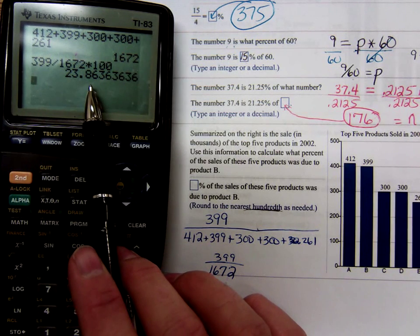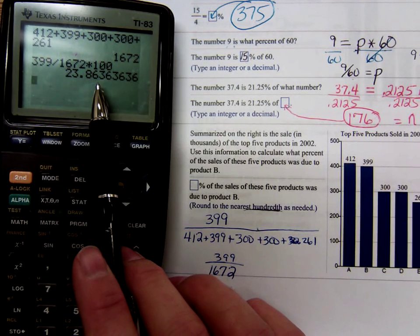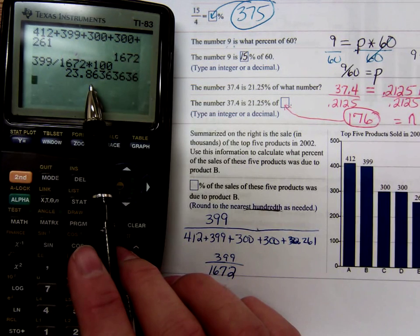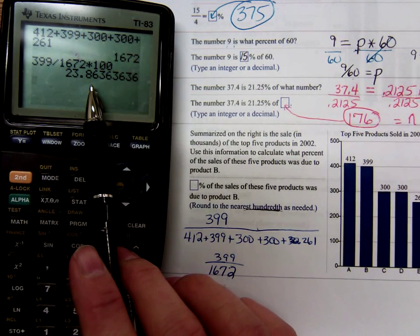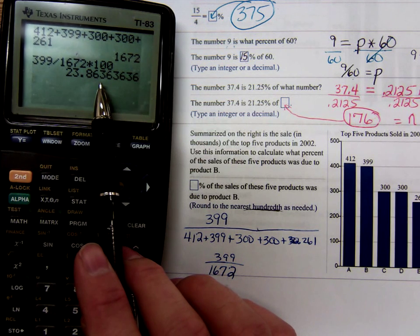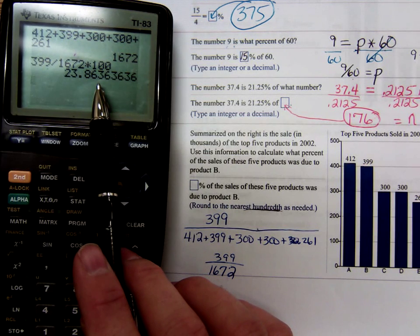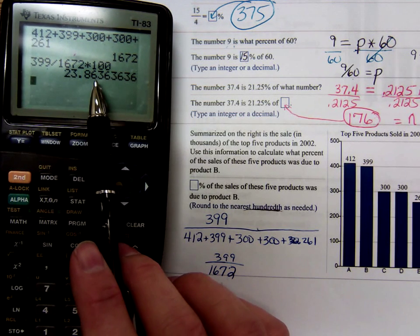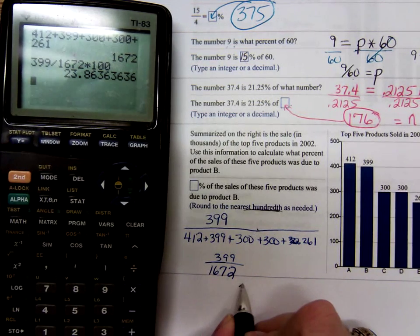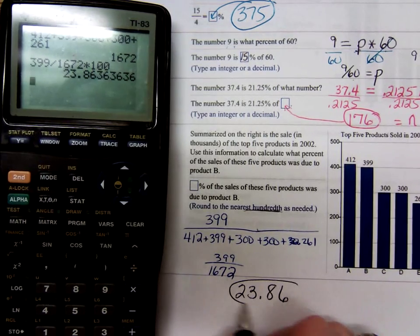Hundredths would be two digits after the decimal point. So we have 23.863. To round to the nearest hundredth we're either going to leave that as a six or make it into a seven. And the way you decide, if you look at the digit after it, and if the digit after it is five or larger you round it up. If it's four or smaller you just drop all of that. So we're going to drop it and leave it as 23.86 percent.